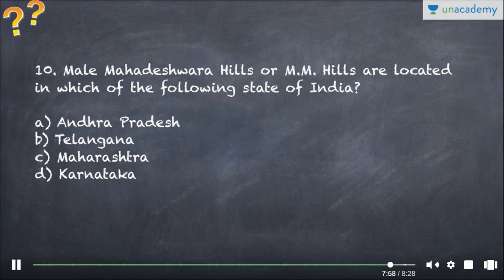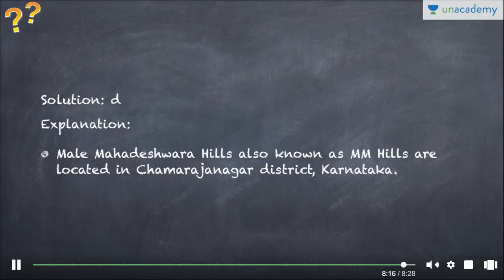Question ten: Malay Mahadeshwara Hills, or MM Hills, are located in which state of India? It was in the news, which is why it is included. The answer is Karnataka — specifically in Chamarajanagara district. This can also appear in match-the-following questions. Please write your score in the comment section below, give the course a five-star rating, review it, and thank you for watching. Have an awesome day!